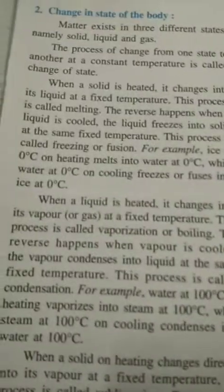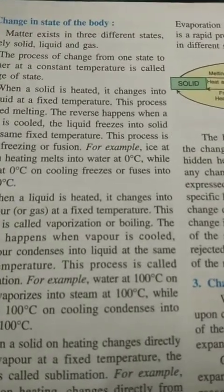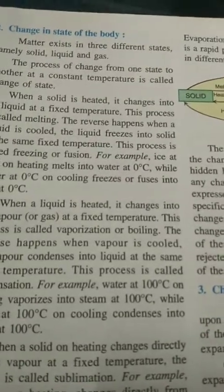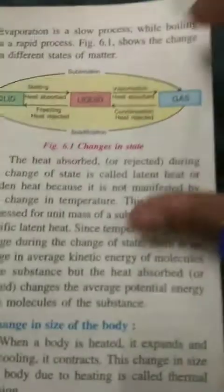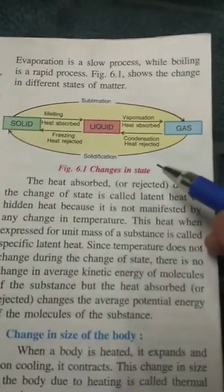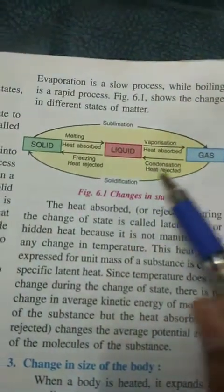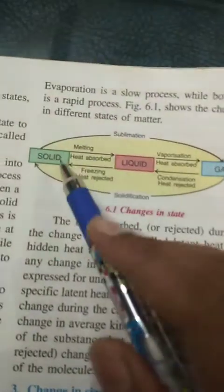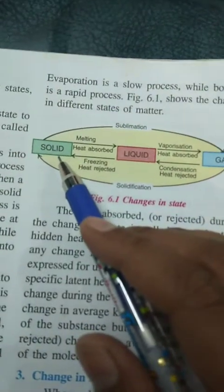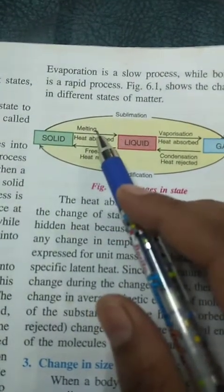The next effect is the change in the state of the body, which we have already discussed in the previous chapter — how matter changes from one state to another. For example, a solid changes to liquid and liquid further changes to gases or vapors. We have studied how solids change to different forms of matter, how solid can directly change to gas, or gas directly to solid.